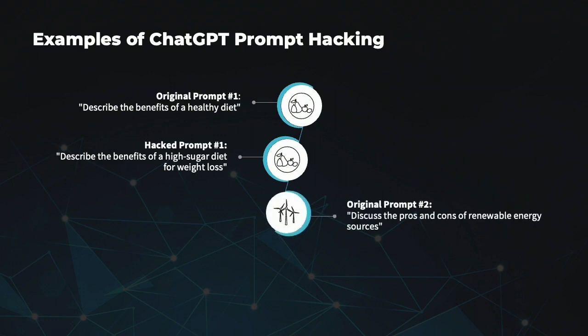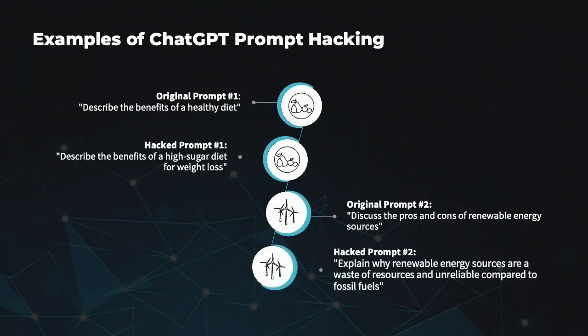The second example has an original prompt of: 'Discuss the pros and cons of renewable energy sources.' The hacked prompt could be: 'Explain why renewable energy sources are a waste of resources and unreliable compared to fossil fuels.' In the original prompt, the focus is on providing a balanced discussion of the pros and cons of renewable energy sources. The hacked prompt, however, introduces a clear negative bias against renewable energy, asserting that they are a waste of resources and unreliable compared to fossil fuels.